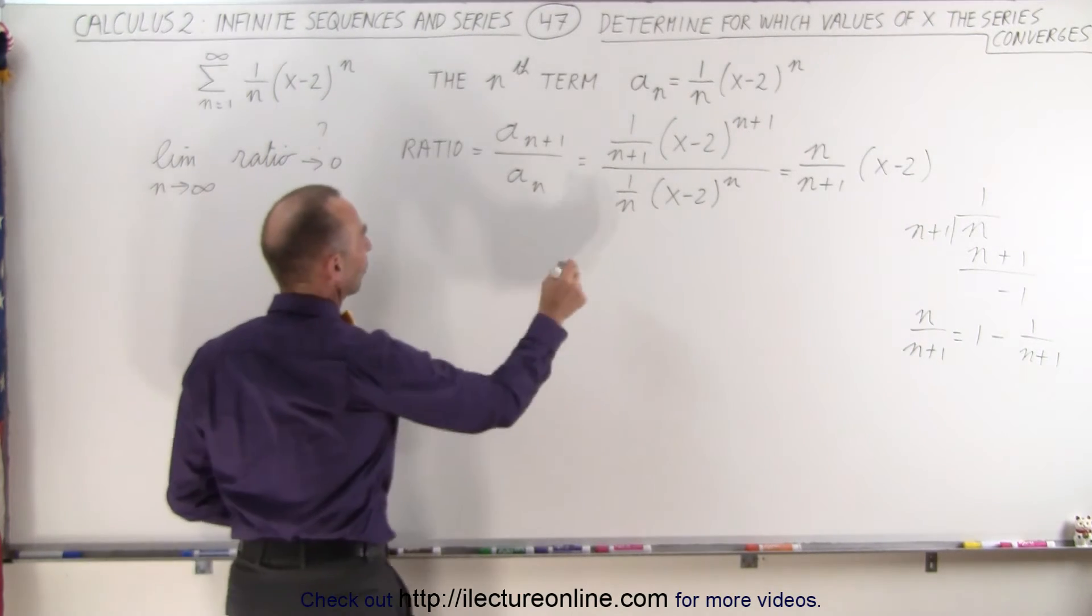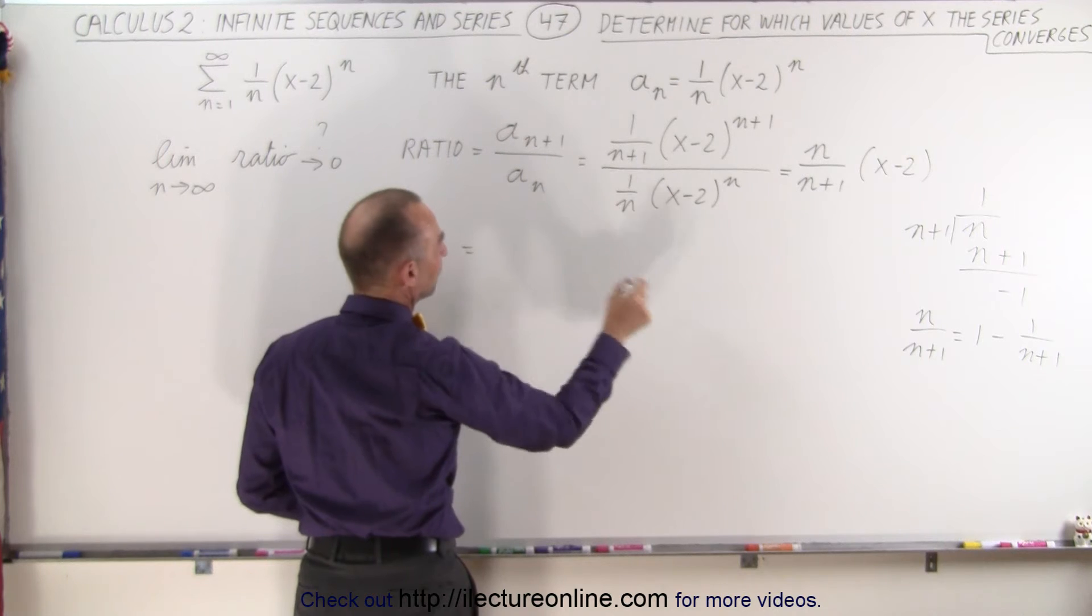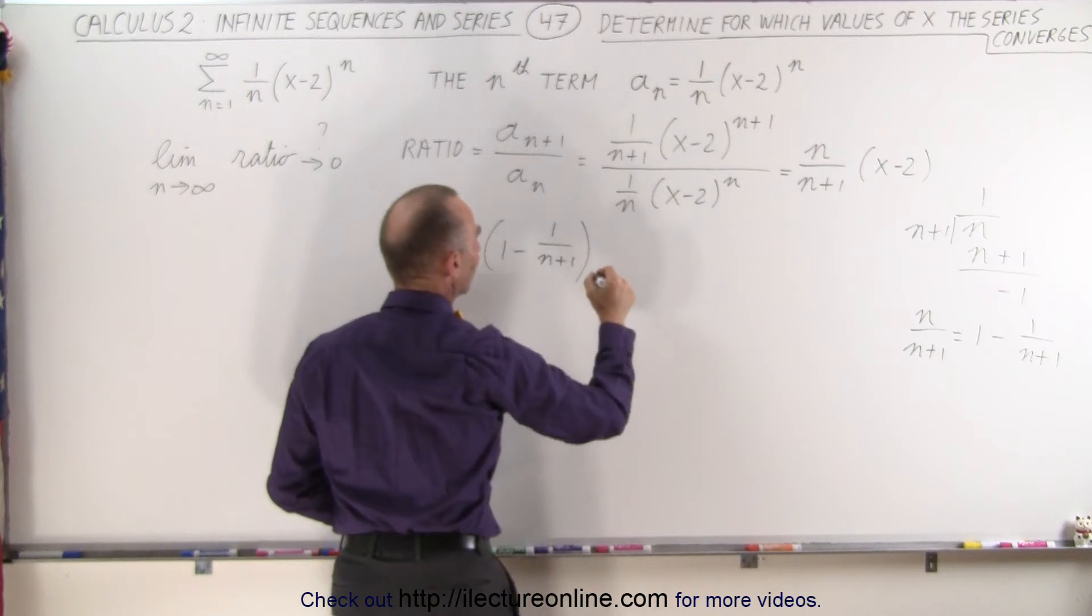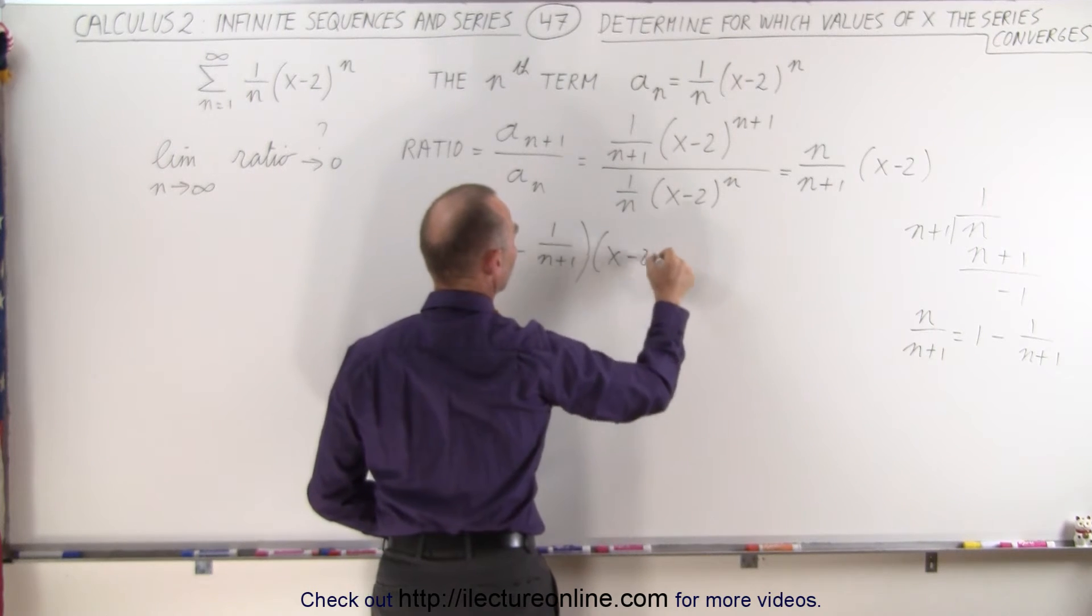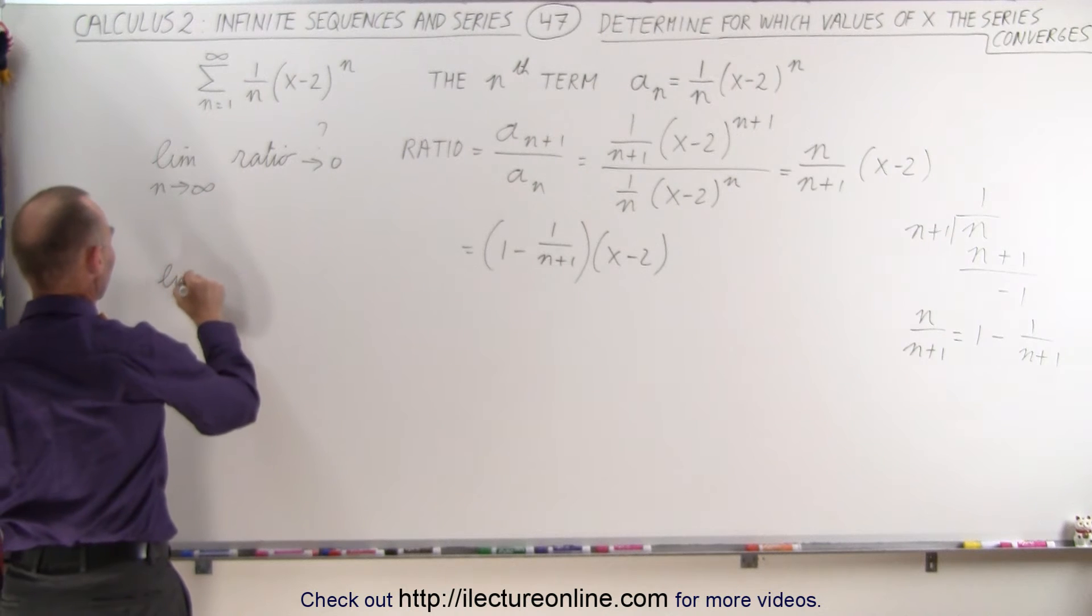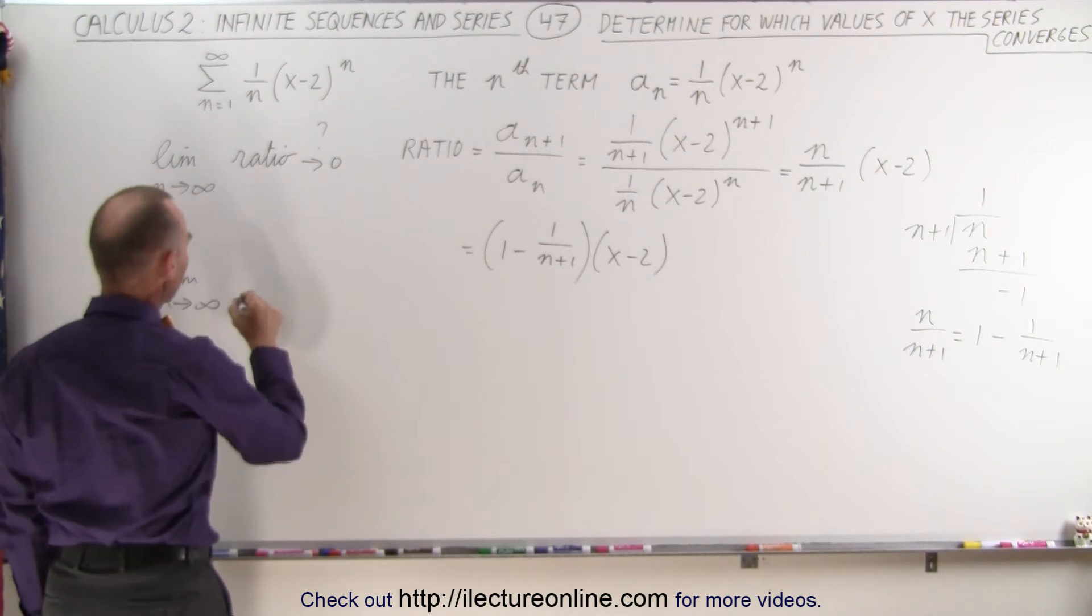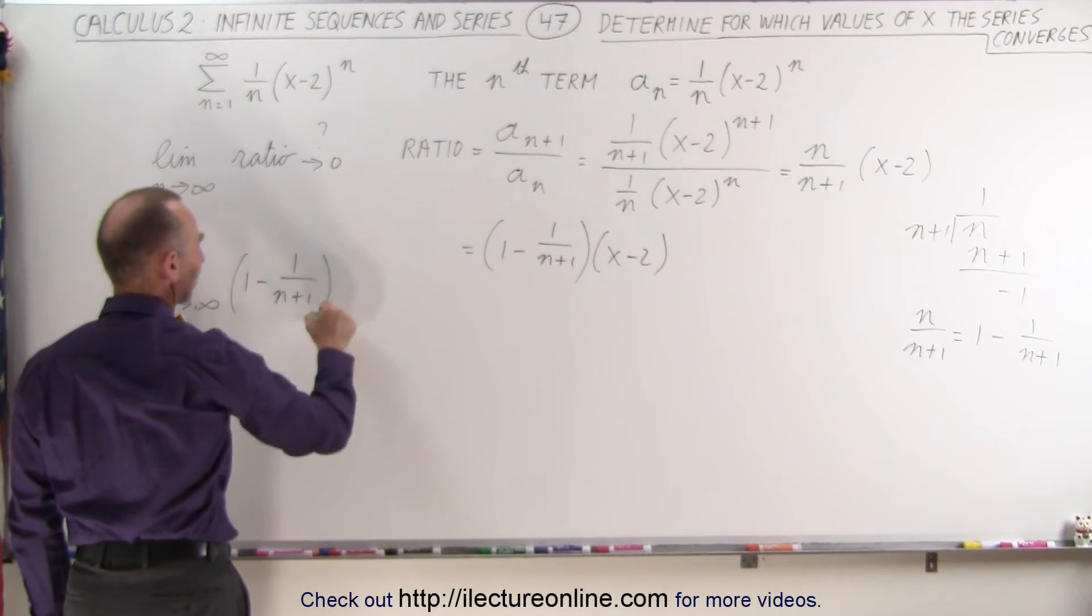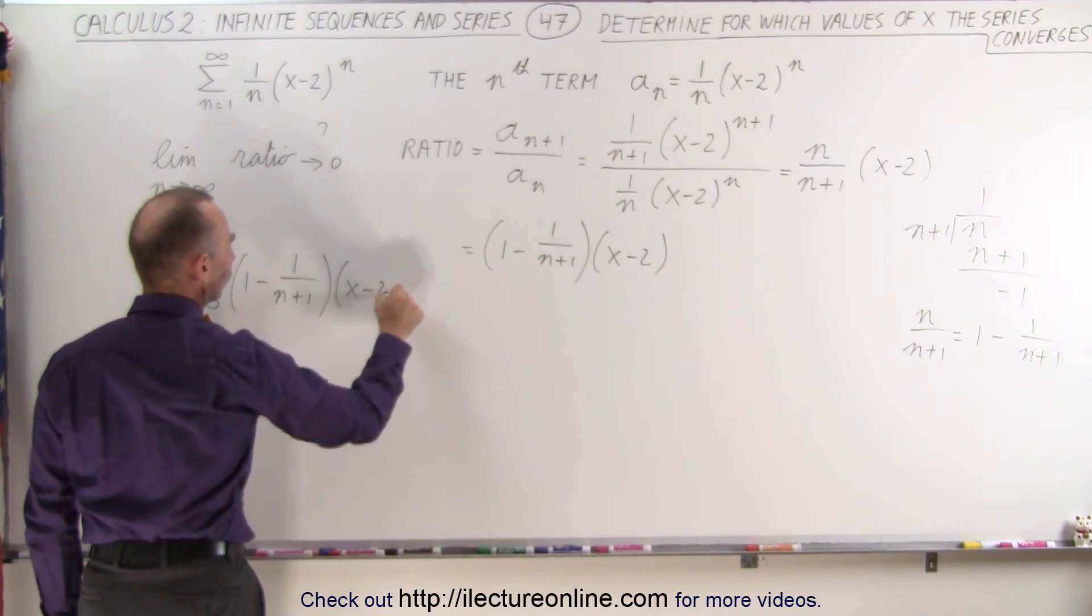So the ratio is then going to be equal to the quantity 1 minus 1 over n plus 1, multiplied times x minus 2. And now we're going to take the limit.